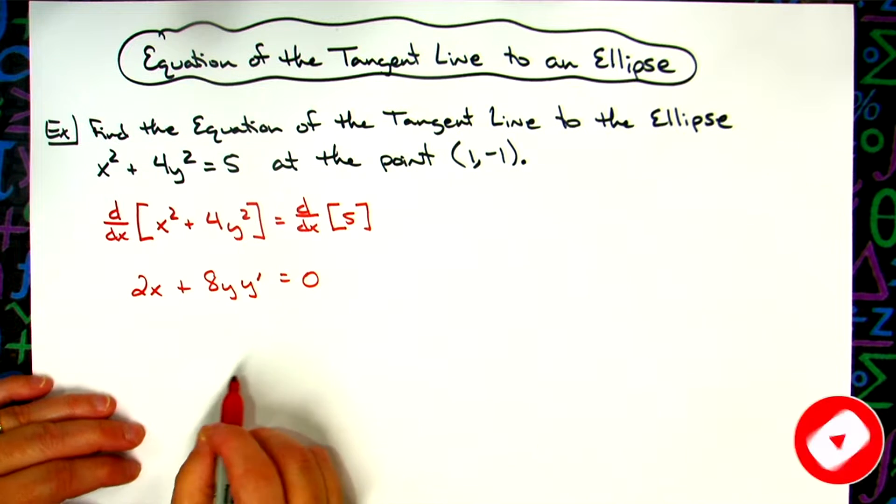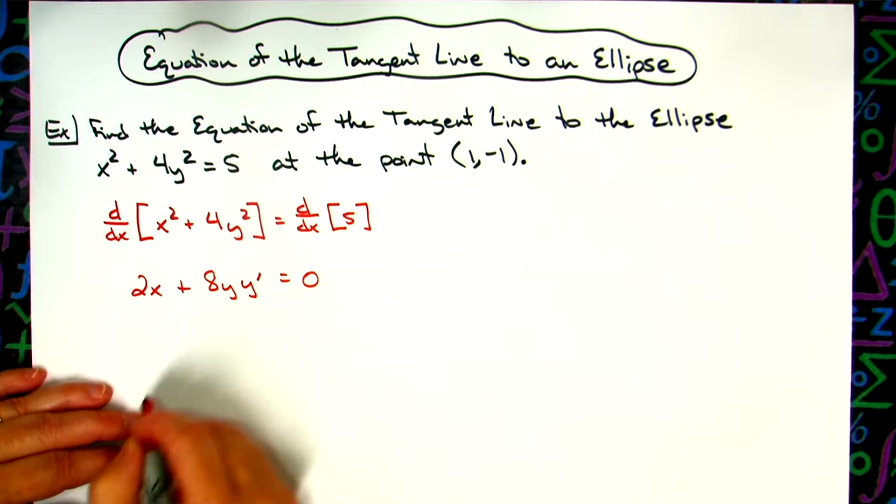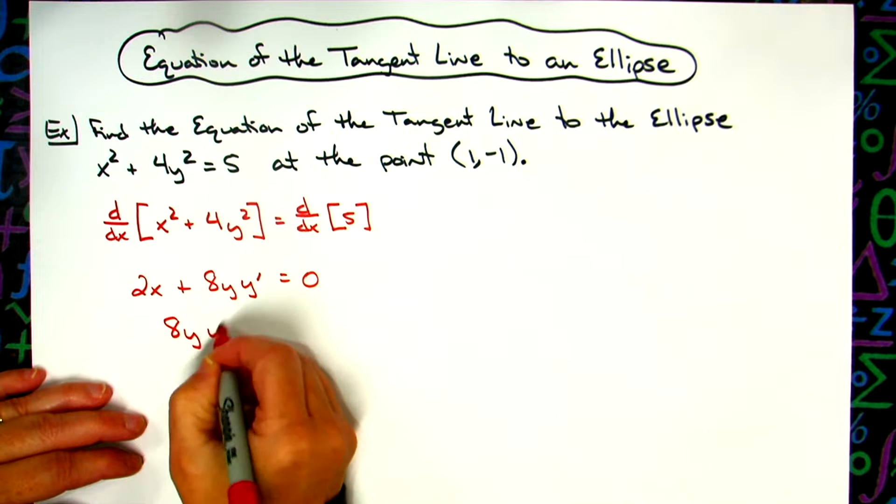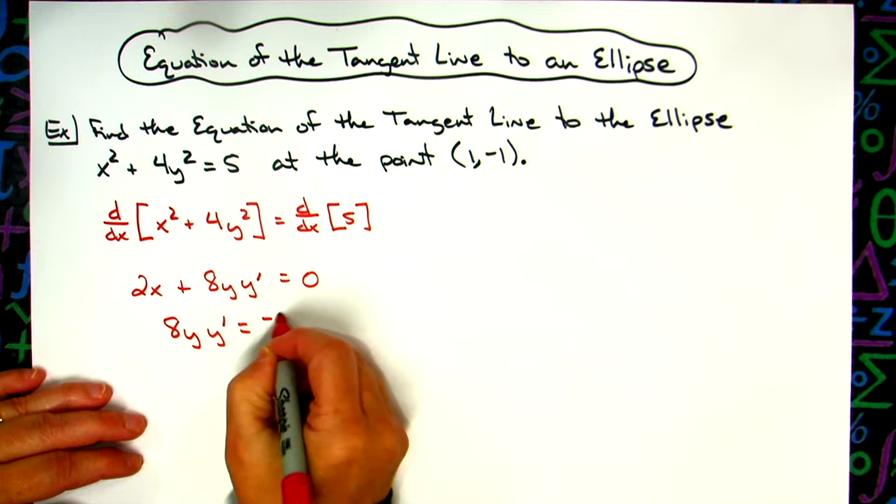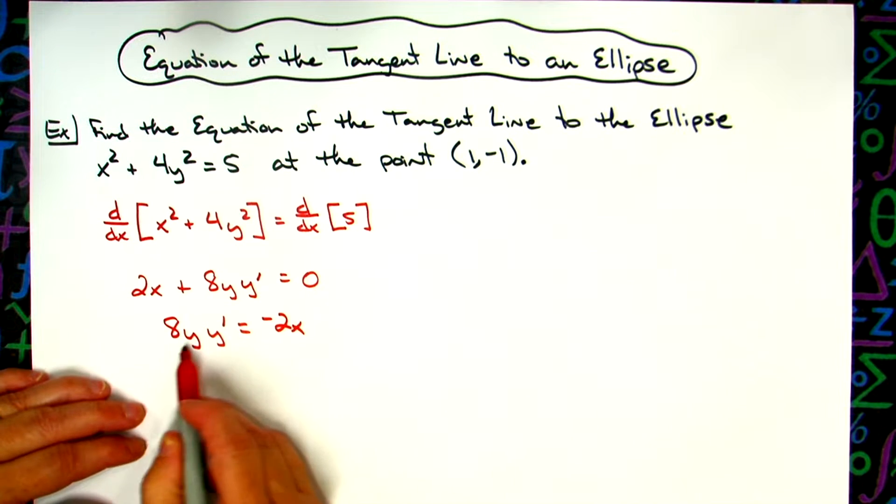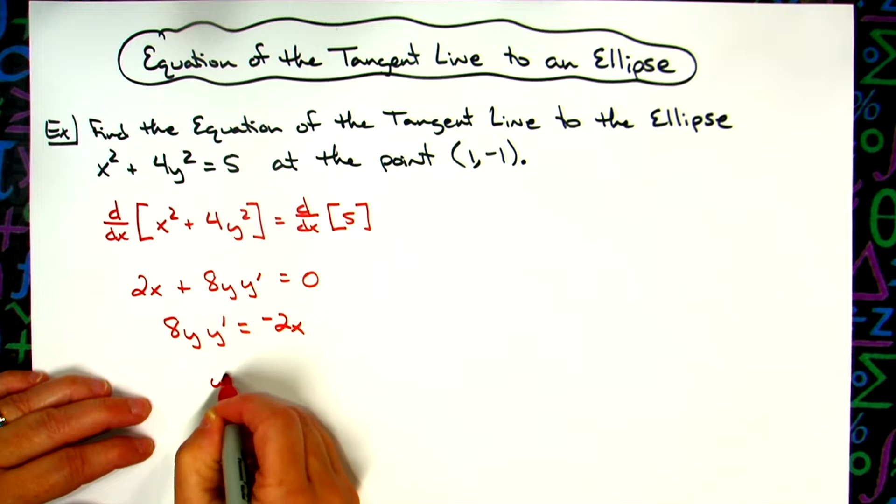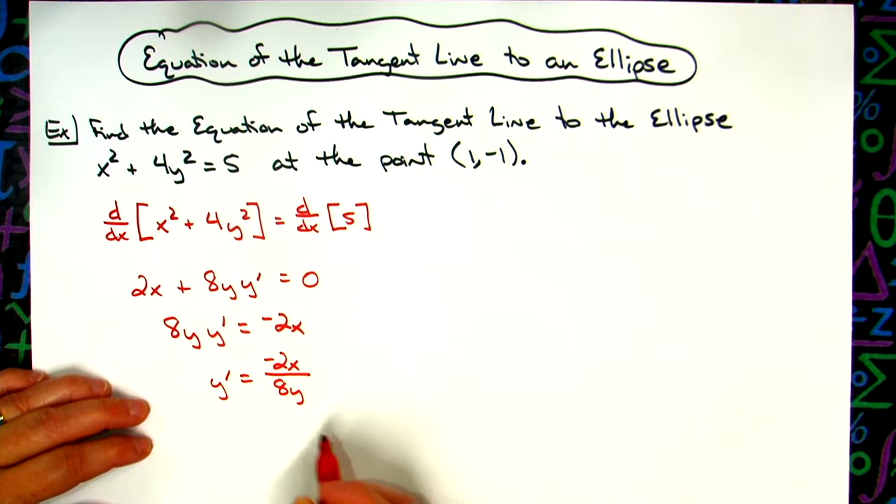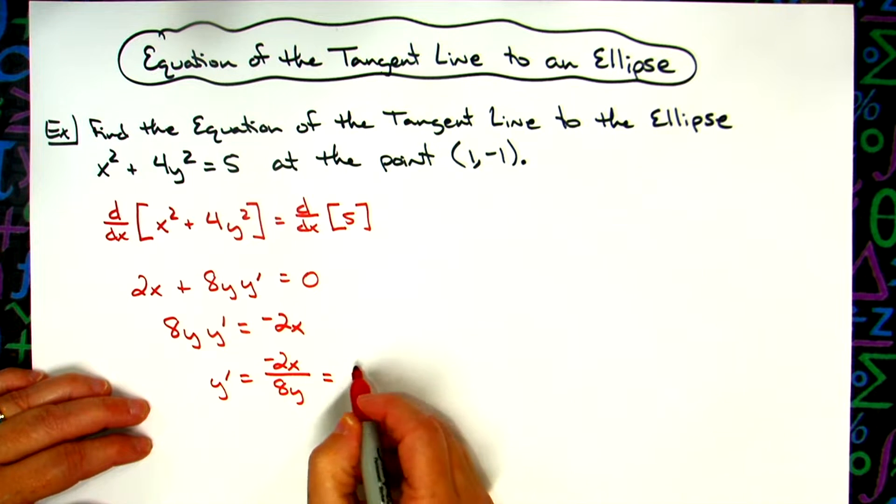I want to solve this for y prime. I'm going to subtract 2x from both sides, so 8y y prime equals negative 2x. Then divide both sides by 8y, so y prime equals negative 2x over 8y. We can reduce that to negative x over 4y.